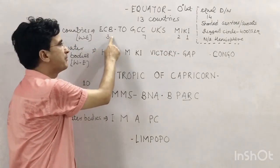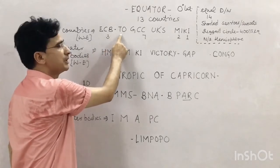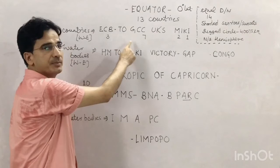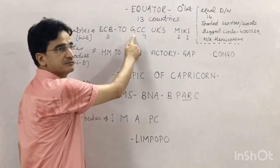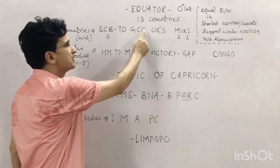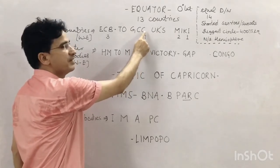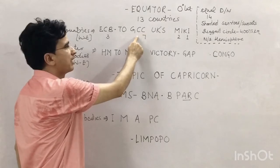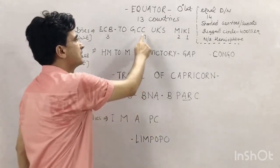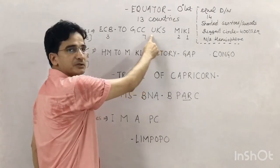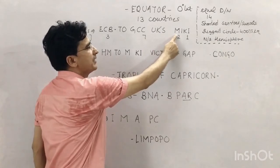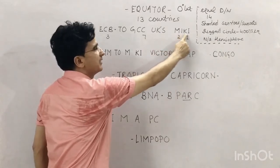Continuing from Ecuador: Colombia, then Brazil. Then Sao Tome and Principe, then Gabon, then Republic of Congo, then Democratic Republic of Congo — it comes eastward because D (Democratic) comes before R (Republic) in the alphabet. Then Uganda, Kenya, Somalia, Maldives, Indonesia, and Kiribati.